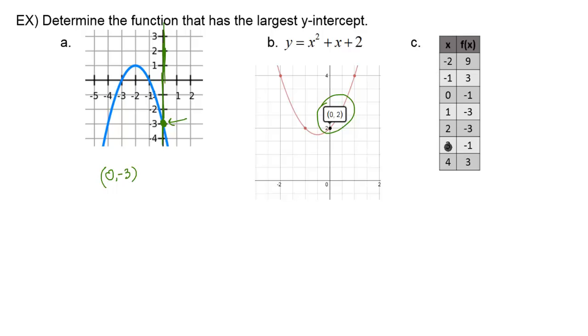On part C, we're given a table. So should we graph? Well, actually, we don't have to graph this because, like I just said in the Desmos graph, when I pull up the table, I know that my y-intercept is going to be when x equals 0. So where does my x equals 0 here on this table?